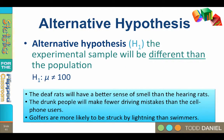Later we're going to learn that alternative hypotheses can be directional or non-directional. For now, just concentrate on learning that there are null hypotheses and alternative hypotheses, and that the null hypothesis is the one that assumes no difference.